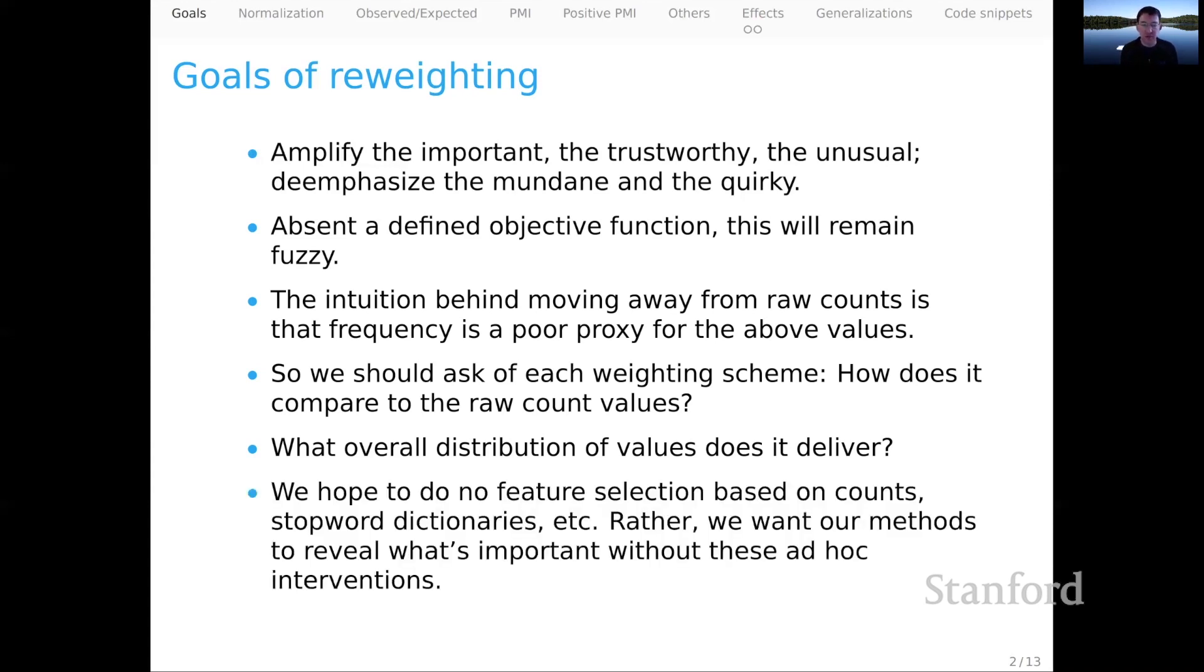And then finally, I personally have a goal that we would like to do no feature selection based on counts or outside resources like stop word dictionaries. I don't want to be filtering off parts of the vocabulary a priori, because for all I know, something that's a boring stop word for one genre is actually an important content word for another. We would like the method to sort of make that decision.